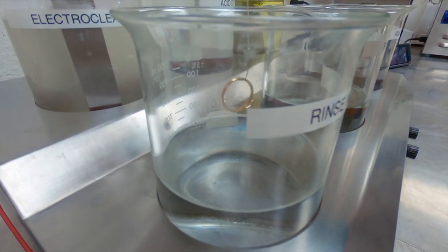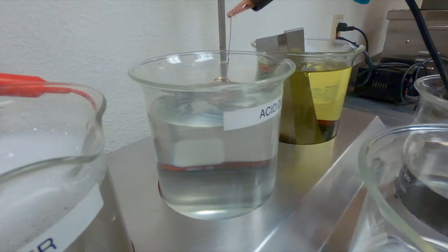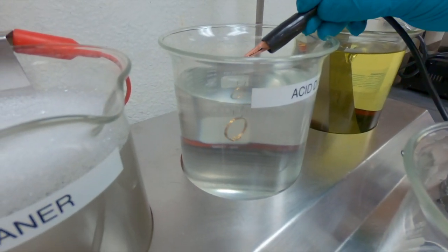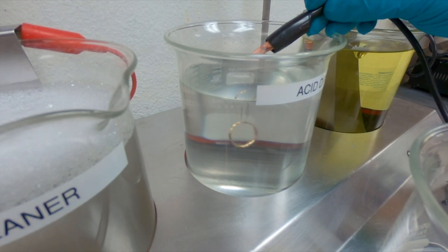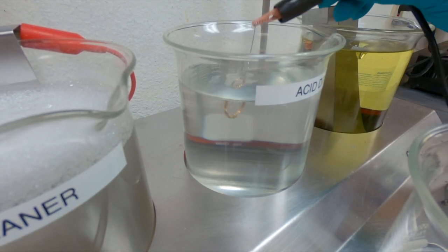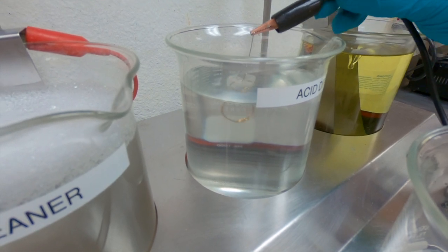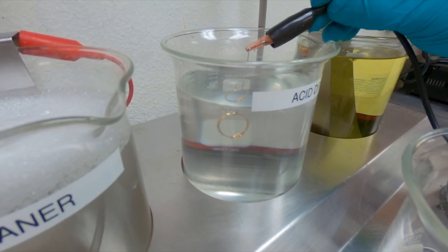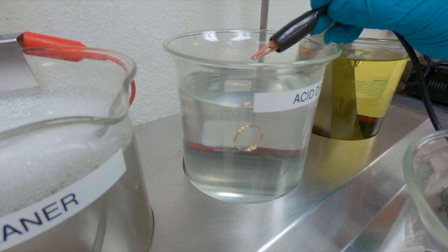Once the piece is rinsed, I'm going to go into the acid dip neutralizer. The acid dip is not heated. It's at room temperature and no electrical current is needed for the acid dip. The acid dip neutralizes any leftover chemical residue from the electro cleaner and it prepares the surface for plating.